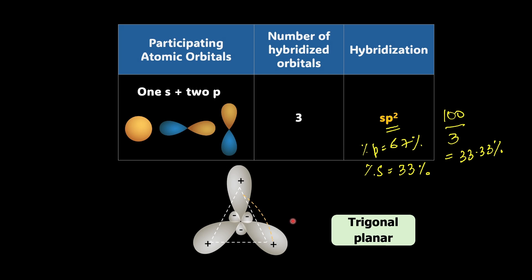Now these three sp2 orbitals spread out in a flat triangle pointing toward the corner of the triangle, with the angle of 120 degree. That's right. So this arrangement helps reduce repulsion between electrons and gives better orbital overlap for bonding. So this is trigonal planar geometry.